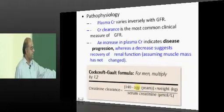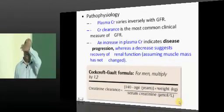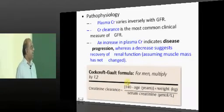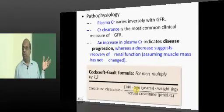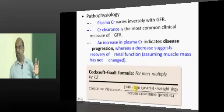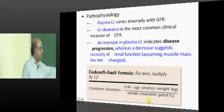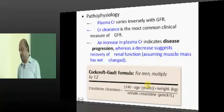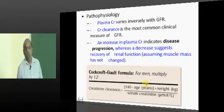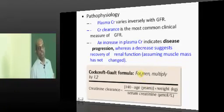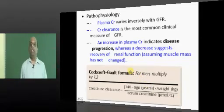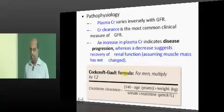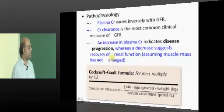Of course, there are corrections for units such as micromoles per liter. For men, you multiply the value by 1.2. For women, the same formula applies to calculate the creatinine clearance, which is an important indicator of the progression of chronic renal failure.